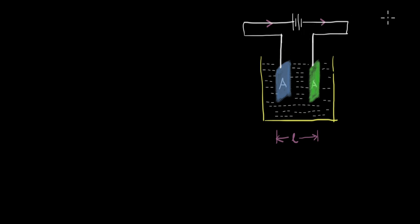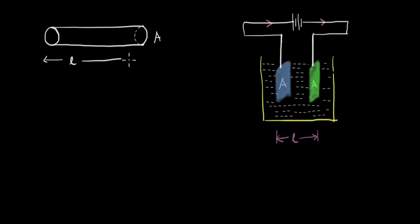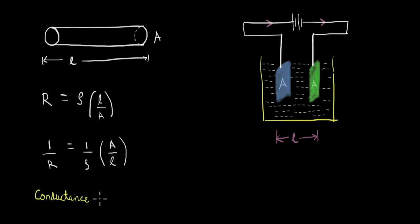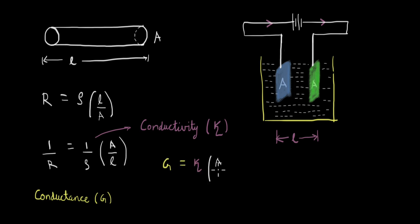We've seen something very similar when we looked at resistance and resistivity. For a metallic wire with cross-section area A and length L, the resistance R is defined as rho times L over A, where rho is the resistivity. Rearranging: 1/R equals (1/rho) times (A/L). So 1/R — the inverse of resistance — is conductance G, and 1/rho — the inverse of resistivity — is conductivity kappa. Therefore, conductance G equals kappa times A over L.